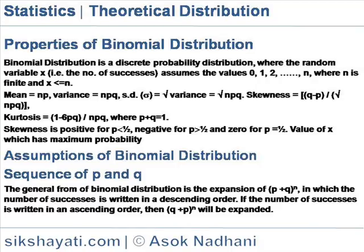Sequence of p and q. The general form of binomial distribution is the expansion of (p plus q) to the power n, in which the number of successes is written in descending order. If the number of successes is written in ascending order, then (q plus p) to the power n will be expanded.